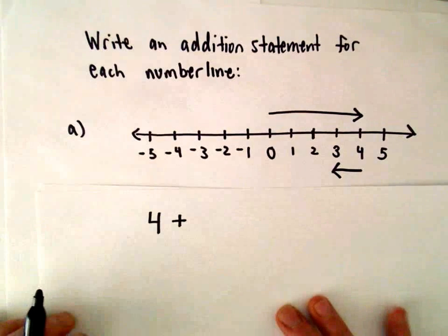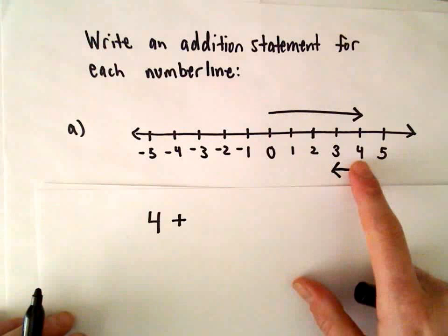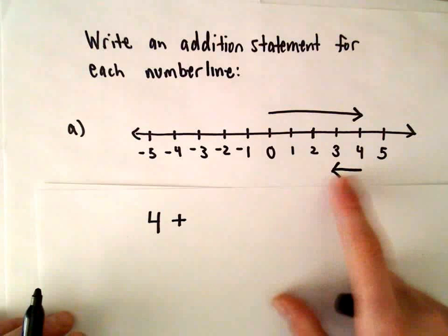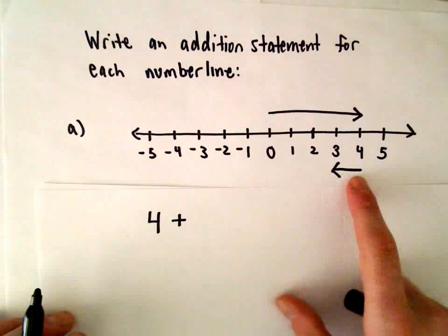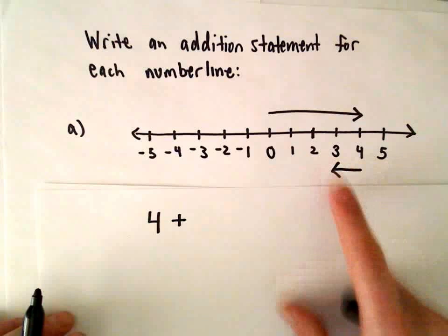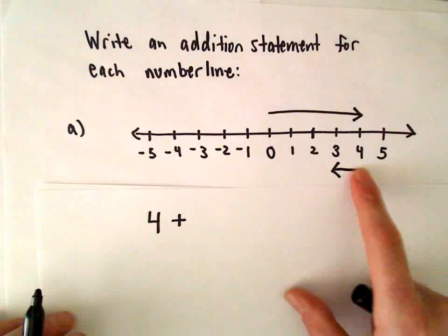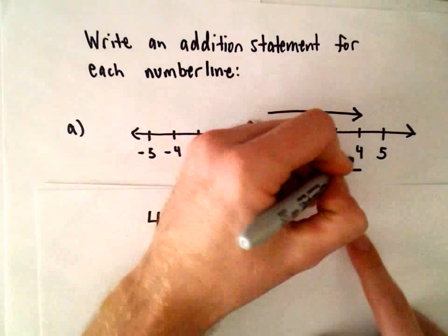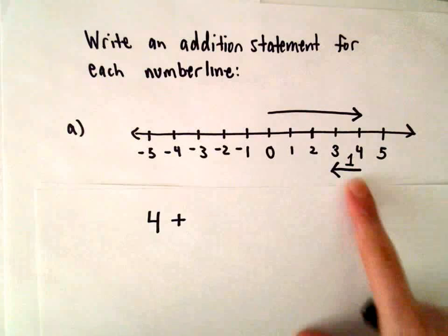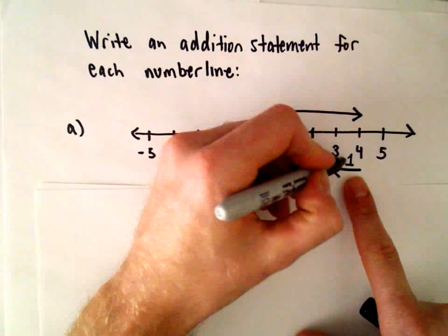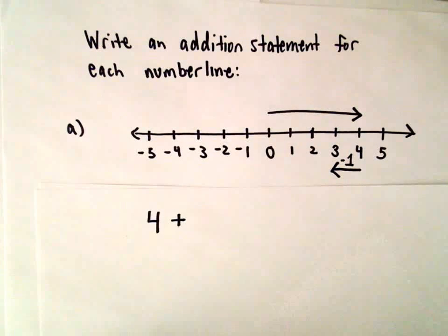And then we're going to add something to it. From four, what we're interested in is the length of the arrow, so be careful. We go from four back to three. What we're really doing is going one unit to the left, in the negative direction.